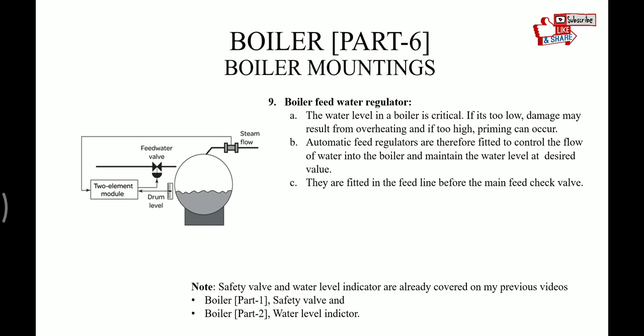Then we have feed water regulator. The water level in the boiler is critical. If it is too low, damage may result from overheating, and if too high, priming can occur. So automatic feed regulators are therefore fitted to control the flow of water into the boiler and maintain the water level to desired value. They are fitted in the feed line before the main feed check valve.